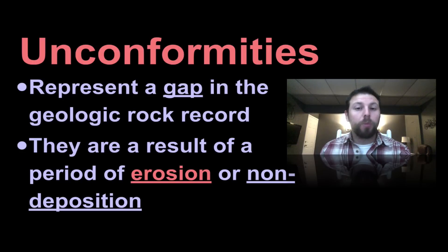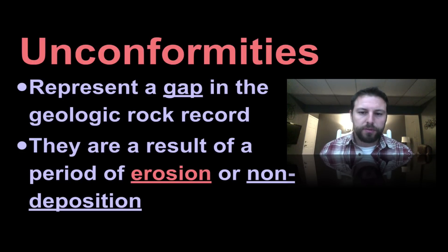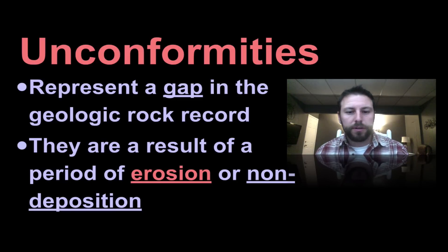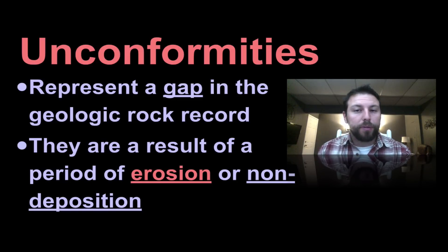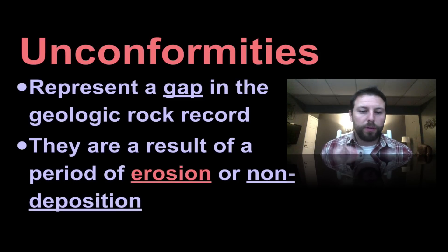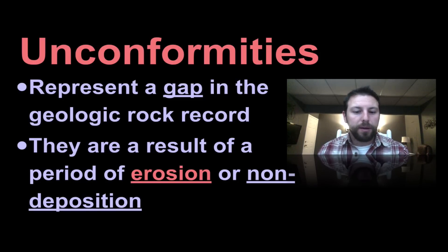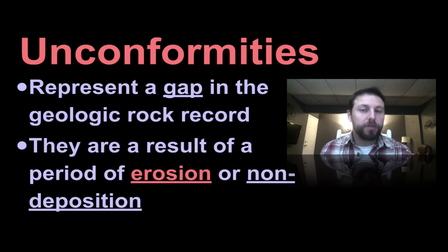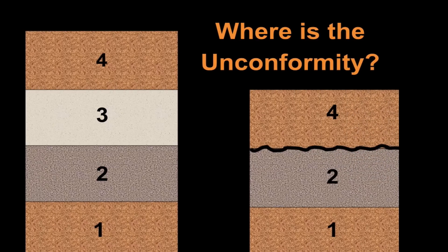Unconformities kind of throw a monkey wrench into things — they represent a gap in the geologic rock record. The only things that could erase rock records are basically weathering and erosion. Weathering will break down those layers and erosion will pull that rock away, or it could be a time of non-deposition. But typically we see it as erosional events.